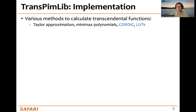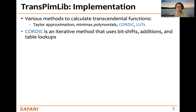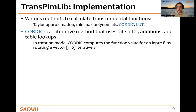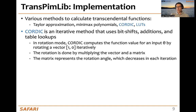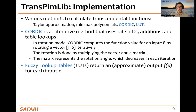There are different methods to calculate transcendental functions, like Taylor approximation, minimax polynomials, CORDIC, and LUT. In TransPIMLib, we choose CORDIC and LUT because they don't require as many multiplications as other methods. CORDIC is an iterative algorithm that uses bit shifts, additions, and table look-ups. In its rotation mode, CORDIC computes a function value of an input angle by rotating a vector iteratively. The rotation is done by multiplying the vector with a matrix that represents the rotation angle, which decreases in each iteration.